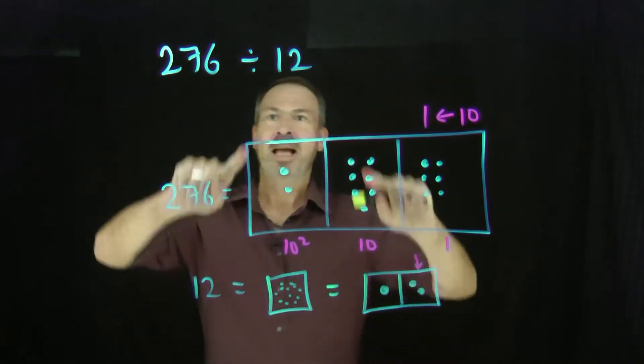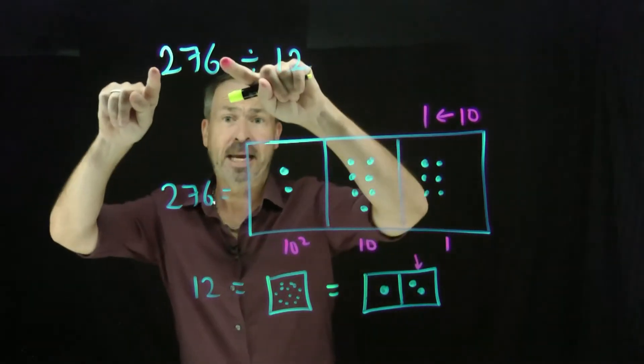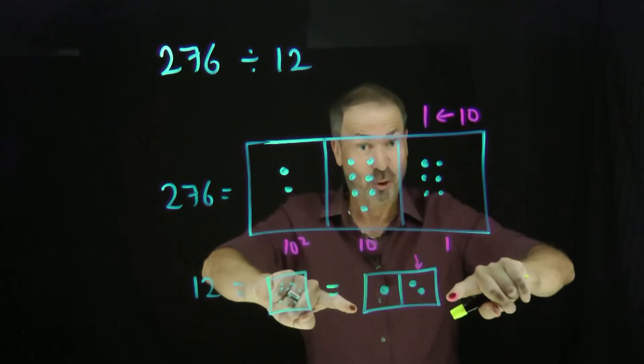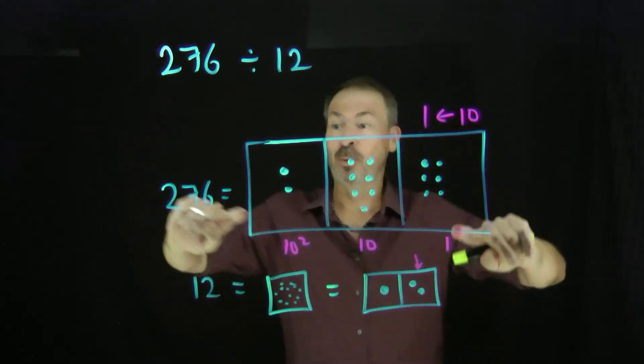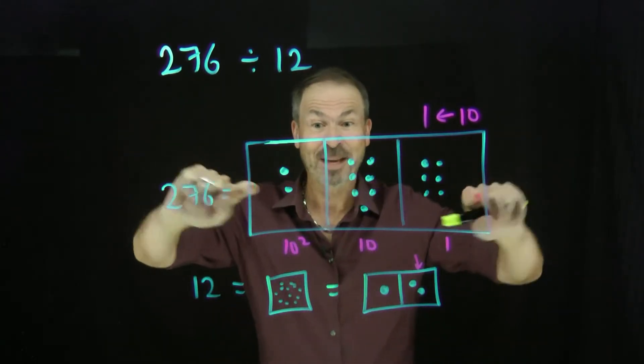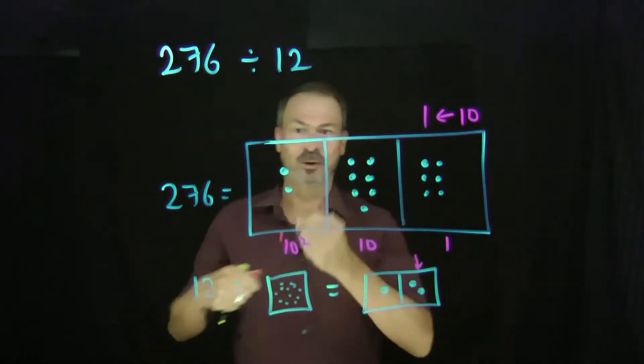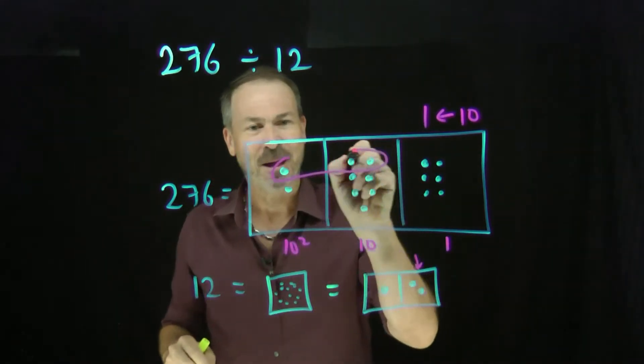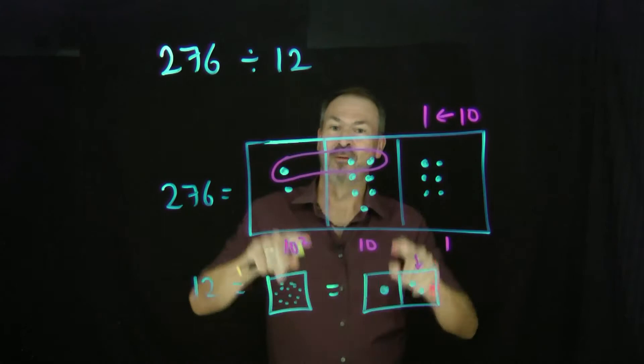So division problems are asking, how many groups of 12 do we see in 276? That is, how many groups of 12, how many copies of this pattern do we see in the pattern for 276? And you look at this and say, there's one dot next to two dots right there. Great. There's a copy of 12 at that level.